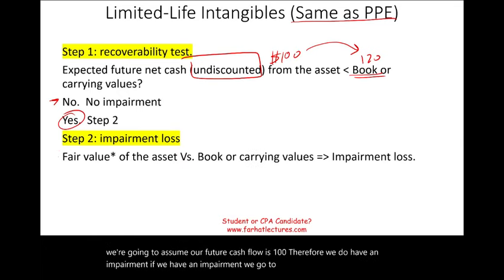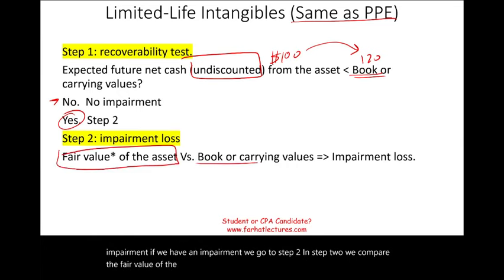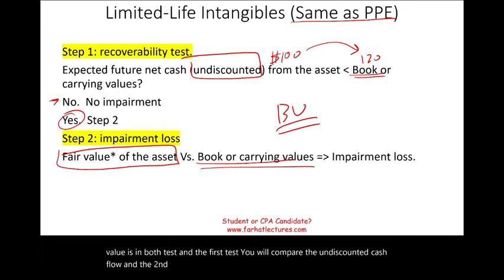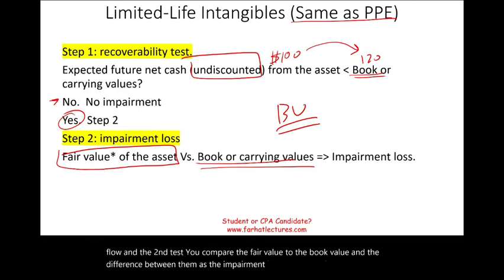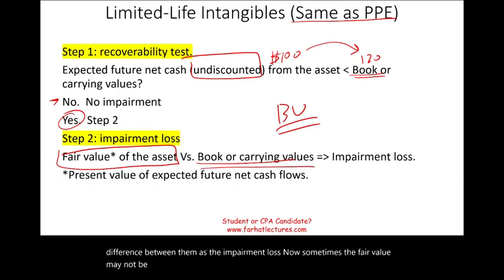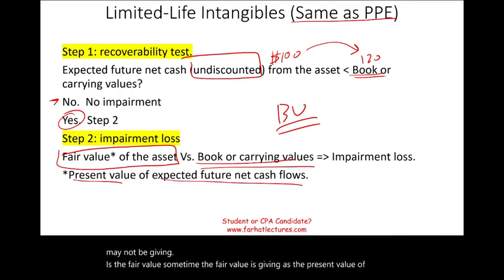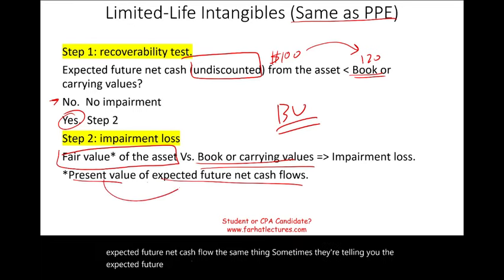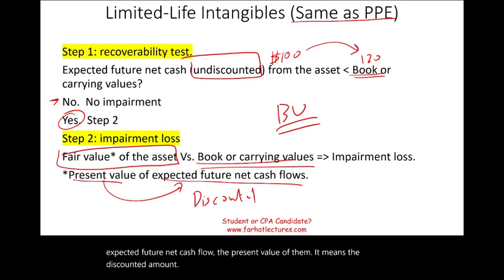In step two, we compare the fair value of the asset versus the book value. The difference between them is the impairment loss. Note that the book value appears in both tests. Sometimes the fair value is given as the present value of the expected future net cash flow — the discounted amount is your fair value. Be careful about this distinction.